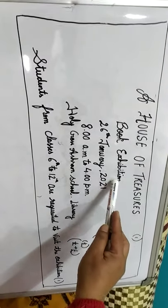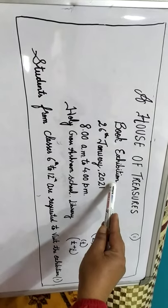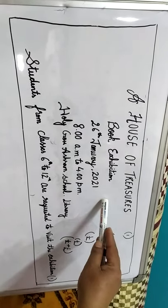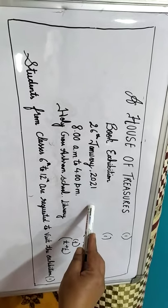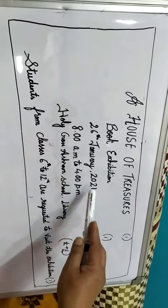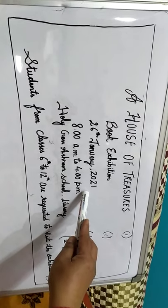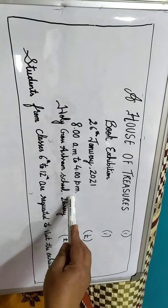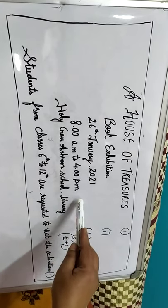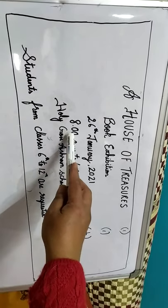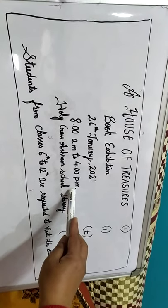The second line is the event. What is the event? Book exhibition. Then in the third line, you will write the date and the year — like 26th January 2021. In the fourth line, from what time to what time the exhibition will be held — it is from 8 o'clock in the morning till 4 o'clock in the evening.